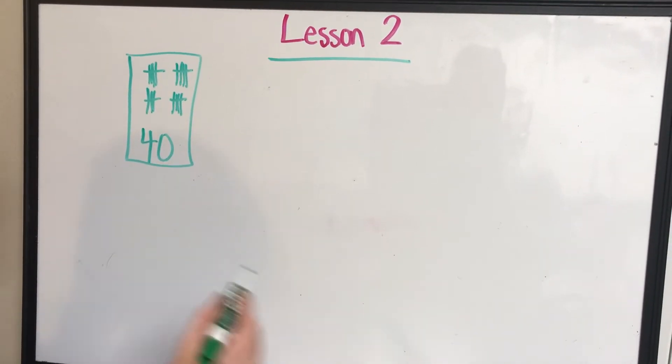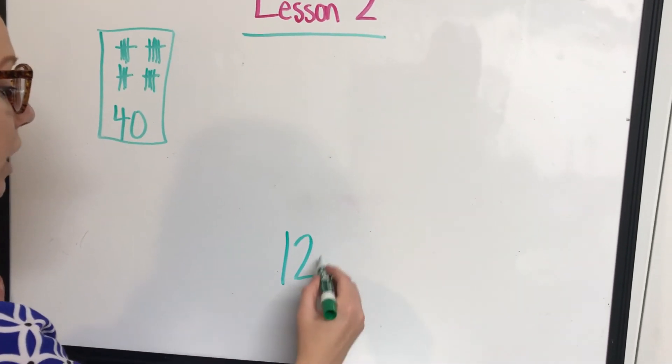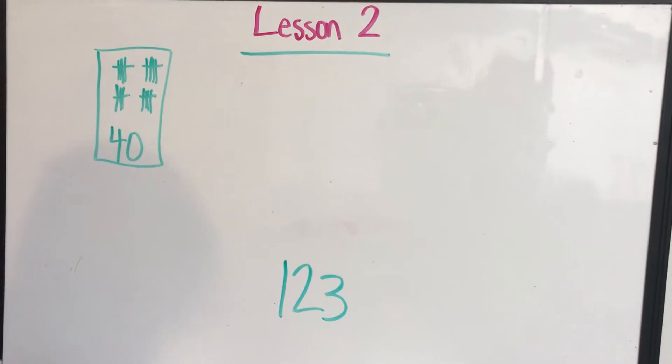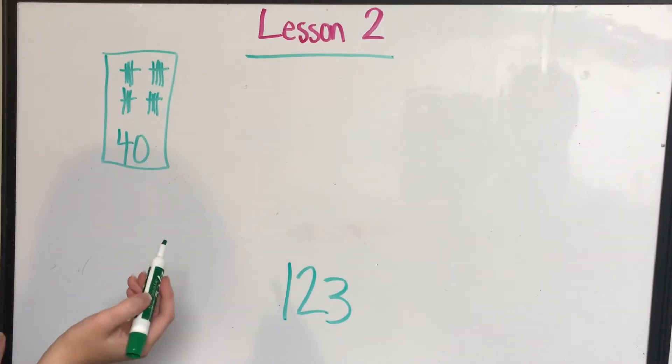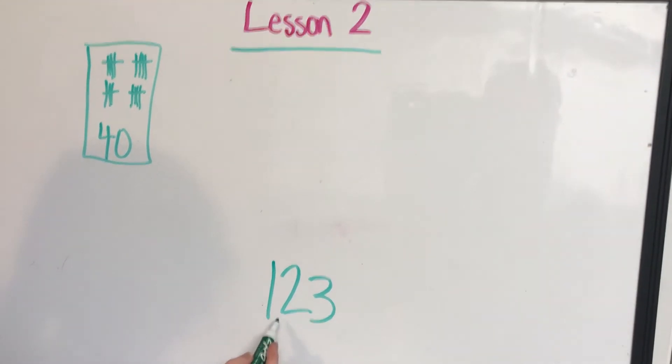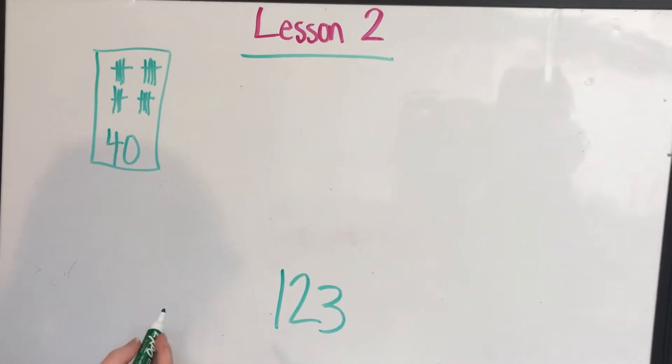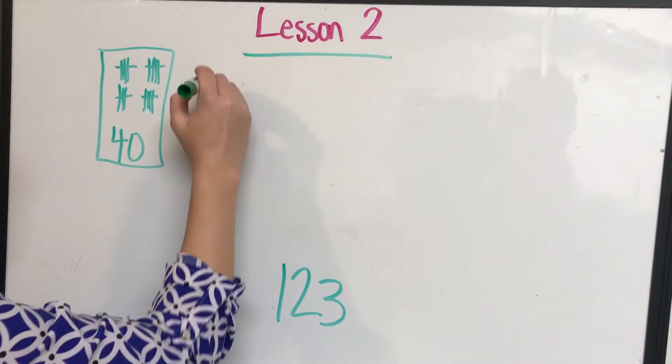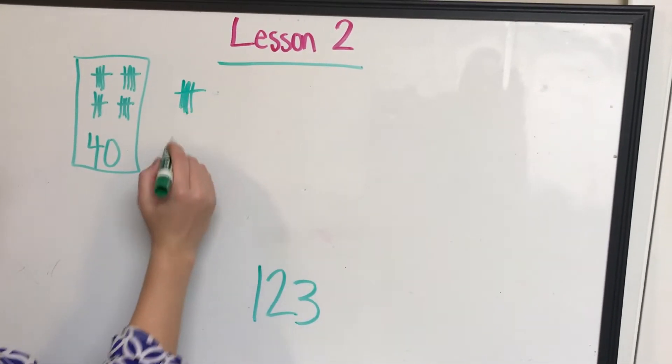Now you're going to count from 40 all the way to 123 this time. Now let's first think, can I use a hundreds block? No, because 40 plus 100 would be way more than 123. Can I use a tens block? Yes, I can.